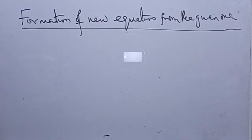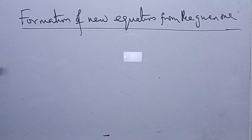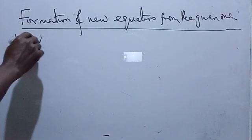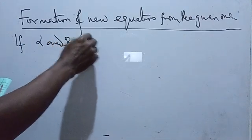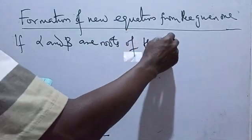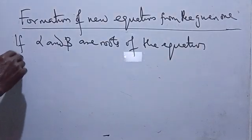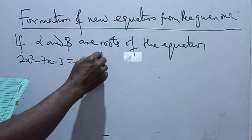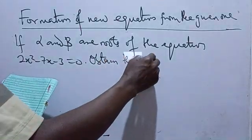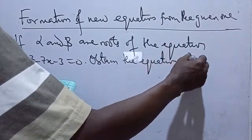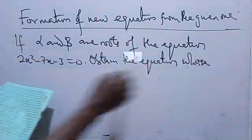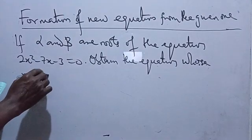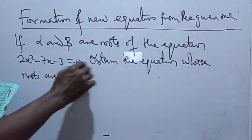Hello. In this video, we want to look at how to form a new equation — a new quadratic equation from the given one. The question says: if alpha and beta are roots of the equation 2x squared minus 7x minus 3 equals 0, obtain the equation whose roots are 1 over alpha squared and 1 over beta squared.